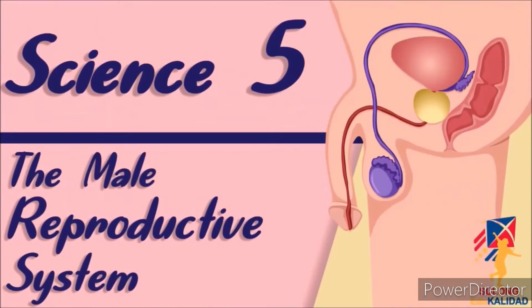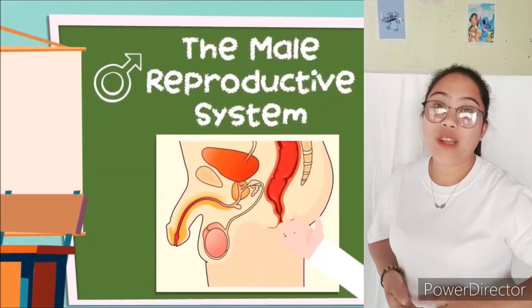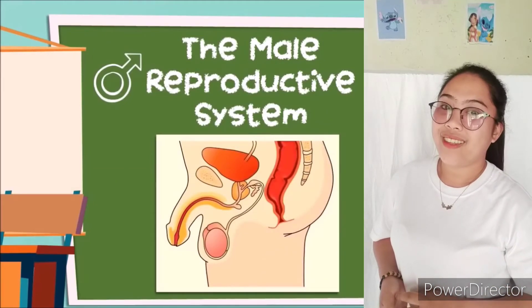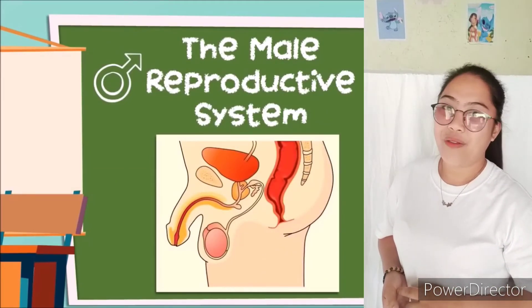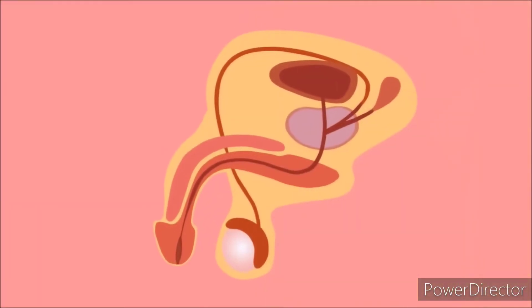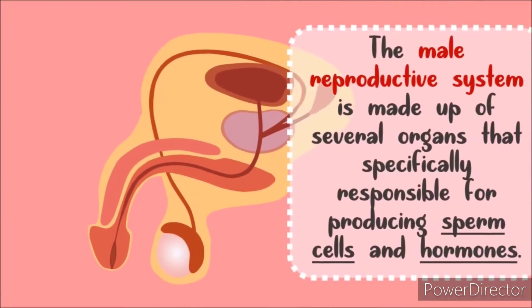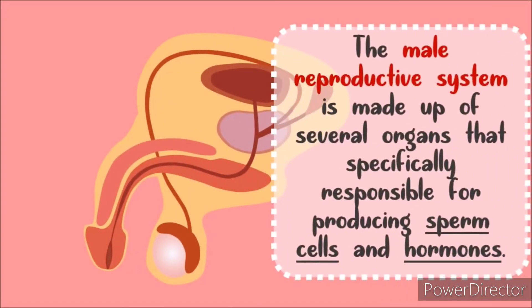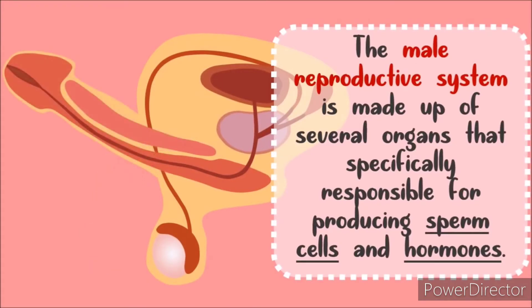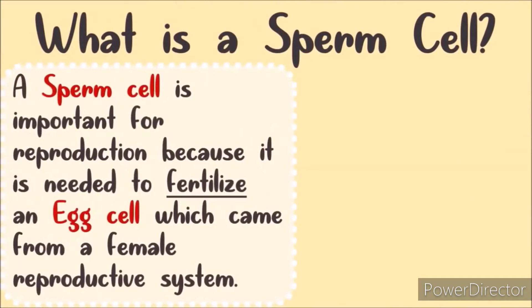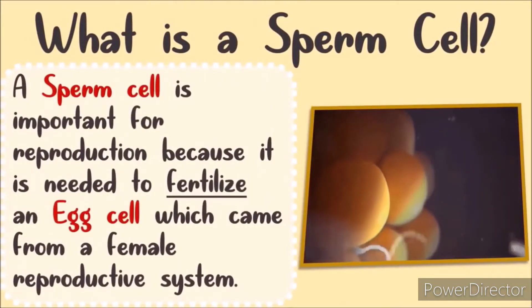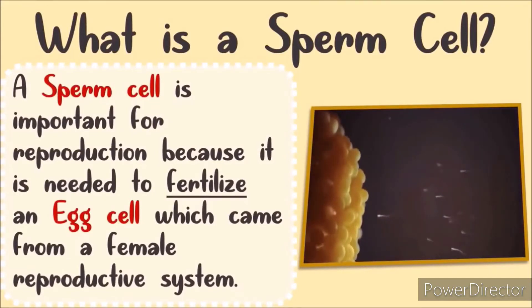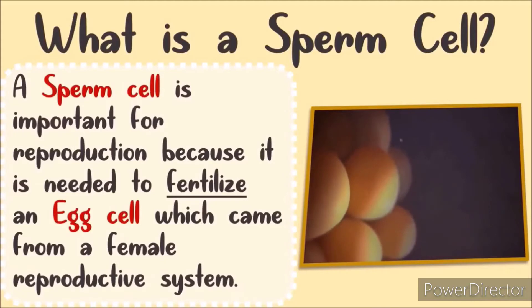Next is the male reproductive system. The male reproductive system is made up of several organs. These are specifically responsible for producing sperm cells and hormones. The sperm cell is important for reproduction because it is needed to fertilize an egg cell that came from the female reproductive system.